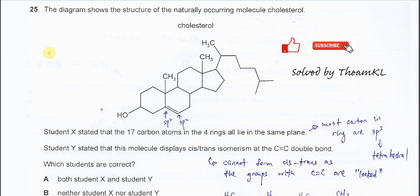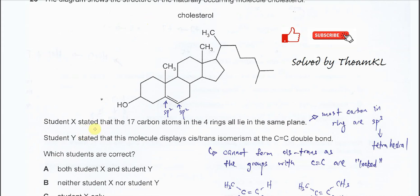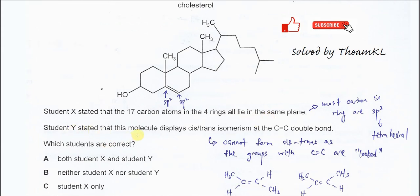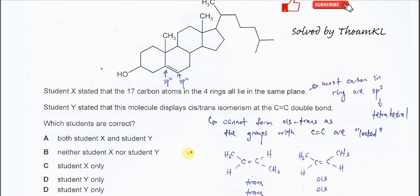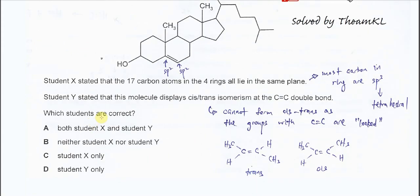Question 25. The diagram shows the structure of cholesterol. Student X stated that the 17 carbon atoms in the four rings are aligned in the same plane. Student Y stated that this molecule displays cis-trans isomerism at the C=C double bond. Which students are correct?